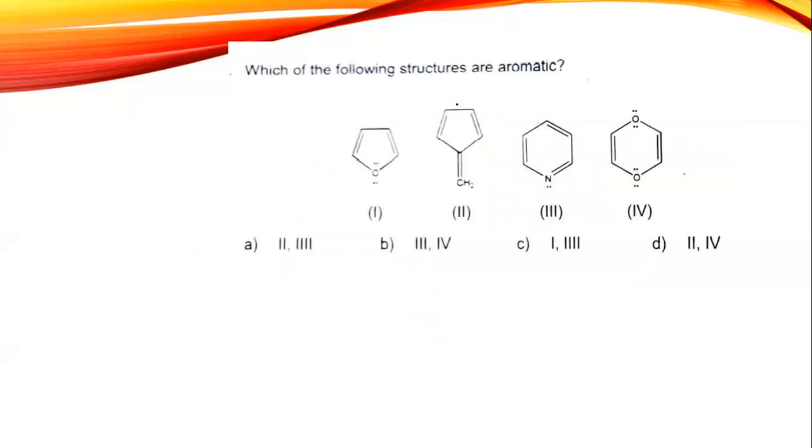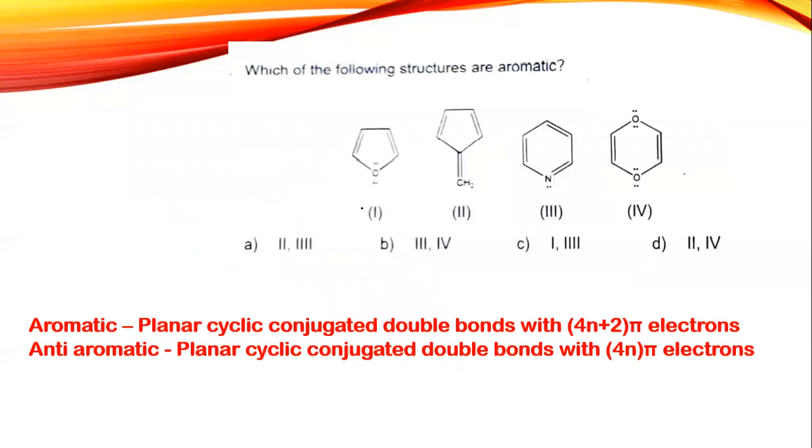Next question: which of the following structures are aromatic? Before that, you need to know Hückel's rule which defines aromaticity. An aromatic compound is planar, cyclic, with conjugated double bonds and 4n plus 2 pi electrons. N can be anything from 0, 1, 2, etc. If it is anti-aromatic, it is planar, cyclic, with conjugated double bonds with 4n pi electrons. But here there is a catch: N starts from 1, 0 is not present.